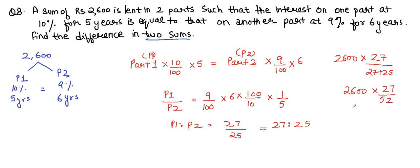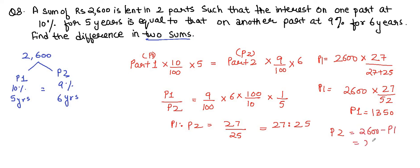Using the ratio 27:25, total parts = 52. Part 1 = 2600 × 27/52 = 1350. Part 2 = 2600 − 1350 = 1250.